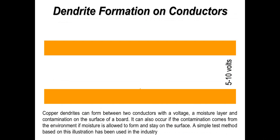When using SIR to look at cleanliness, we look for a change in resistance, which will normally coincide with the formation of some form of dendrite. If we put a droplet of deionized water on the surface between two tracks and apply a voltage, we may find copper dendrites forming between the two tracks. This is an electroplating cell being created between two surfaces. It's dependent on how much moisture is there, the amount of contamination, the voltage, and the distance between the two surfaces. This is the failure mode most commonly seen on real printed circuit boards in real applications.